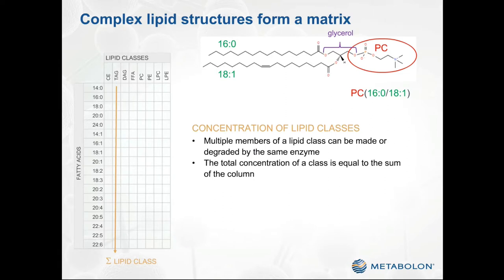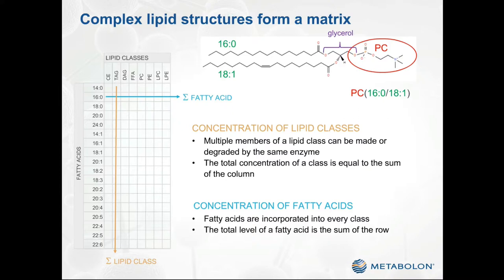Importantly, measurement of different lipids within a single class does not necessarily represent independent measurements, because multiple members of a single lipid class can often be made or degraded by the same enzyme. Therefore, the total concentration of the lipid class, which is represented by the sum of a column, can be as if not more important and informative than the concentration of any individual species. Similarly, a particular fatty acid can be incorporated across many lipid classes, and the sum of a row can also be an important marker of the metabolic status of the system.